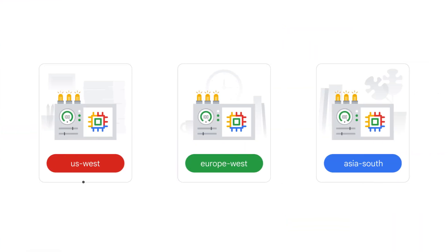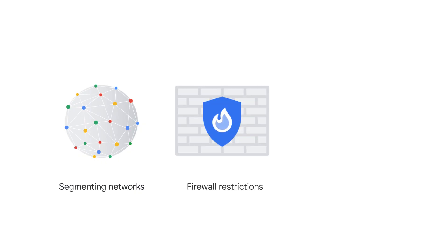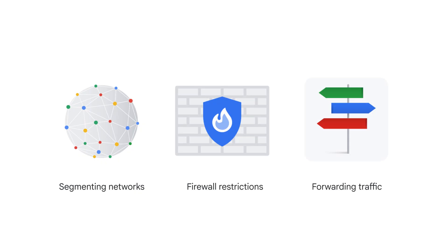VPC networks connect Google Cloud resources to each other and to the internet, and this is pretty important. It's a secure way to let your applications interact with one another, and for your users to interact with your application through the internet. Segmenting networks, restricting access with firewalls, forwarding traffic to specific destinations — these are all things that can be accomplished with VPC networks.